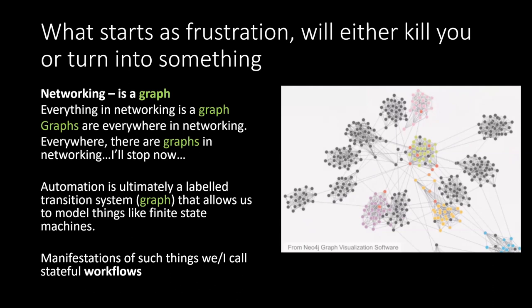I've been in the networking and software space for quite a while. What frustrated me early on was how everybody seems to jump to a device and run CLI commands to try to figure out what a node in a graph was doing. Graph theory — and I'm no mathematician — it turns out that if you apply the fundamentals of graph theory to networking, it becomes a data traversal problem in a graph. Networking can be represented quite easily in a graph database. The problem is getting meaningful data from those graph nodes.